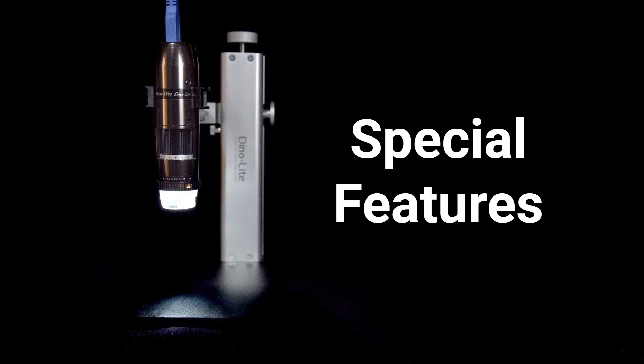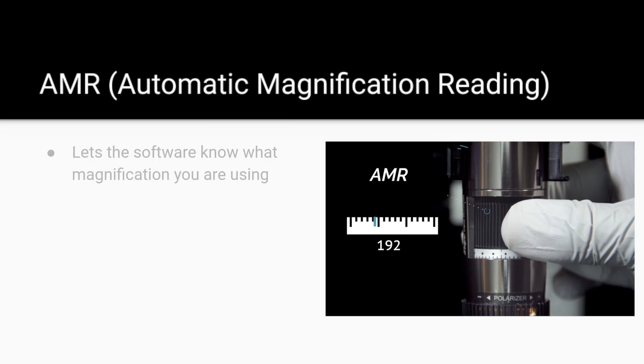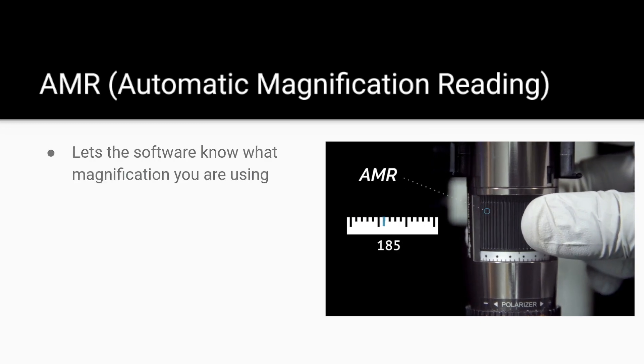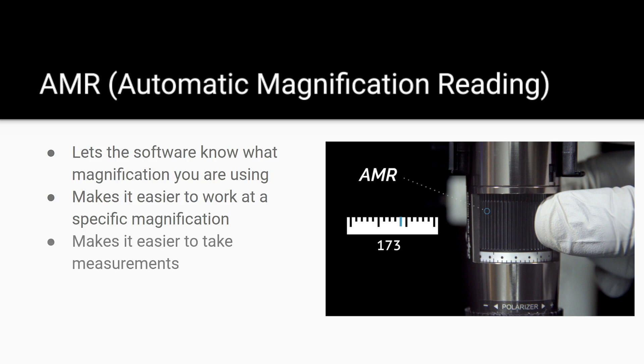Depending on your needs, many Dynalight Microscopes include special features that you won't find on any other microscope in our class. This includes features such as AMR, or Automatic Magnification Reading. This feature lets the software know what magnification you're working at and will display this value on screen. This makes it easier to work at a specific magnification, and since the software knows what magnification you're working at, you can perform measurements without needing to calibrate the microscope first. Of course, you can always calibrate the microscope further to achieve more accurate measurements.